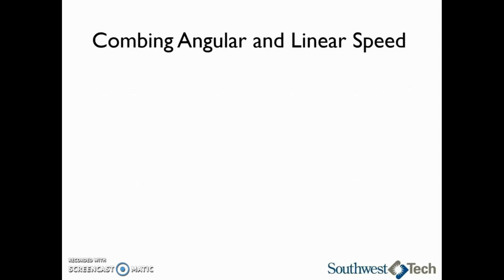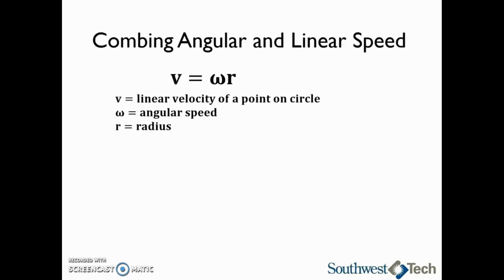Earlier I mentioned that linear displacement is dependent on the radius of the rotating object. When we look at the linear velocity of a point on the circle, we can find the linear velocity by taking omega, the angular speed, and multiplying it by r, the radius of the circle. It is important to note that when we use this equation, we need to make sure that omega, the angular velocity, is given in radians per second. This will give us a linear velocity of either feet per second if the radius is in feet, or meters per second if the radius is in meters.